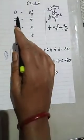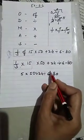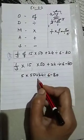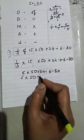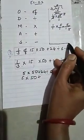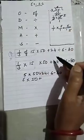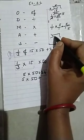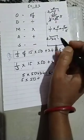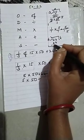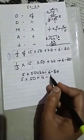Now O is solved. The second operation is D — divide. We will solve 24 ÷ 6. Reading the table of 6: 6 fours are 24, so we get 4. After dividing 24 by 6 we get 4. Rest we write as it is: 5 × 50 + 4 − 80.